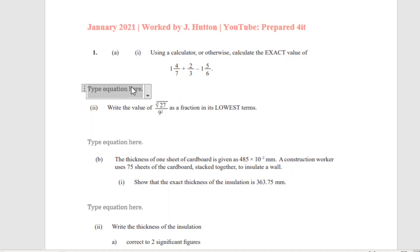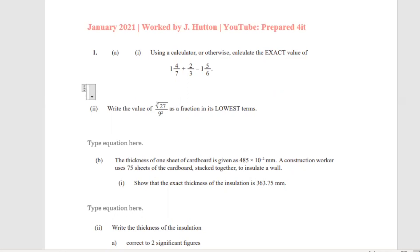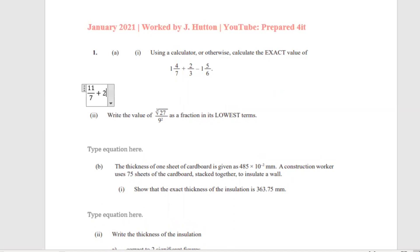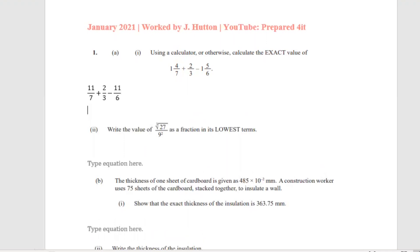So we'll do 7 times 1 is 7, plus 4, to give us 11 over 7, plus we'll write back our 2 over 3, minus 6 times 1 is 6 plus 5, which gives us 11 over 6. Now we need to find the LCM of 7, 3, and 6, which is 42.